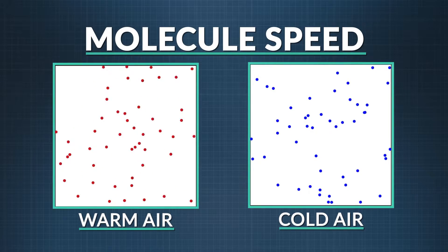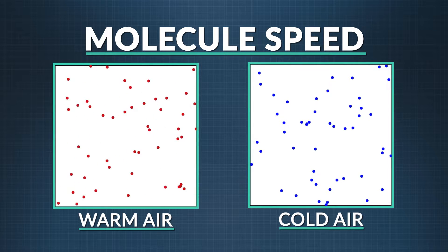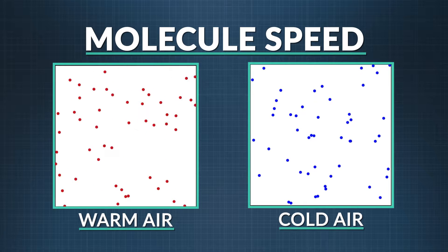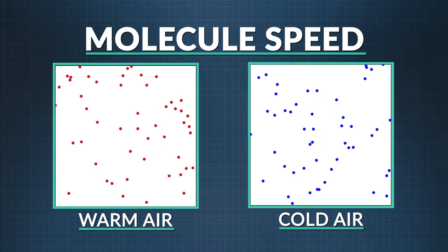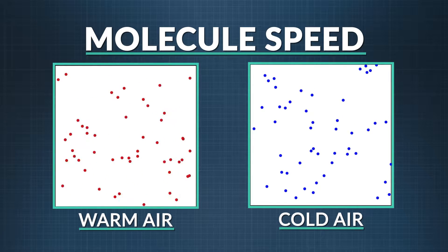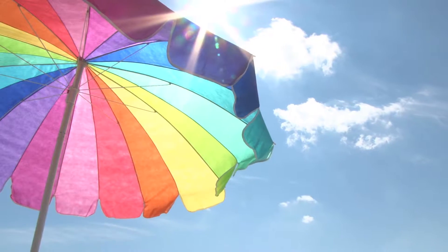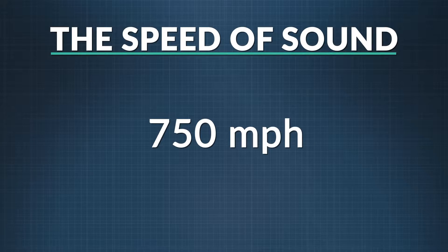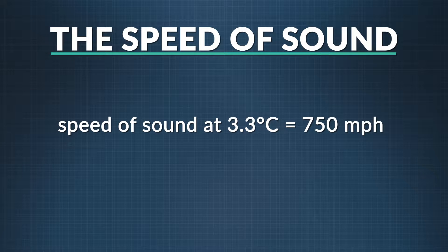Temperature also affects the speed of sound. Sound waves travel faster in warm air than cooler air because the molecules in warm air are moving much faster. Because they're zooming around so much, they vibrate more quickly, which helps transmit the wave faster. That 750 miles per hour figure comes from sound traveling in dry air at 3.3 degrees Celsius, or about 38 degrees Fahrenheit. At room temperature — 20 degrees Celsius — sound travels at 343 meters per second, or 768 miles per hour. The speed increases by about 0.6 meters per second for every 1 degree Celsius increase.